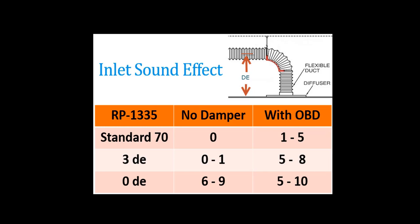When you add the opposed blade damper, the jump in sound happens at the 3 equivalent duct diameter installation. Also noteworthy is that with zero equivalent duct diameter or a 90 degree elbow leading straight into the diffuser, the sound add for with and without a damper is essentially the same.